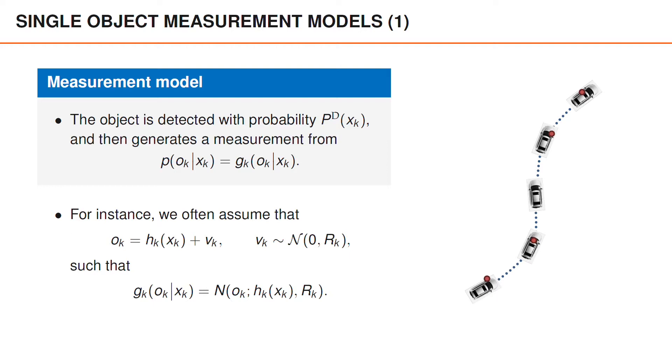Now, it is important to note that the measurement model described here is quite different to the models that we discussed last week, since the object is not always detected. This is illustrated to the right, where you can see red object detections of a car, at all times, except at the time in the middle, where the object is not detected.